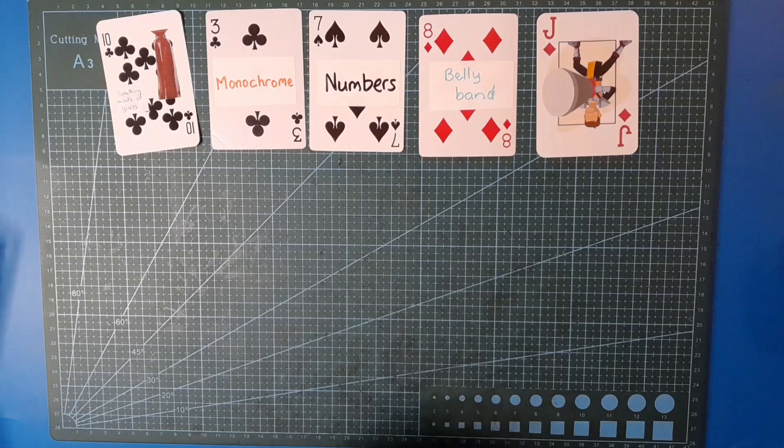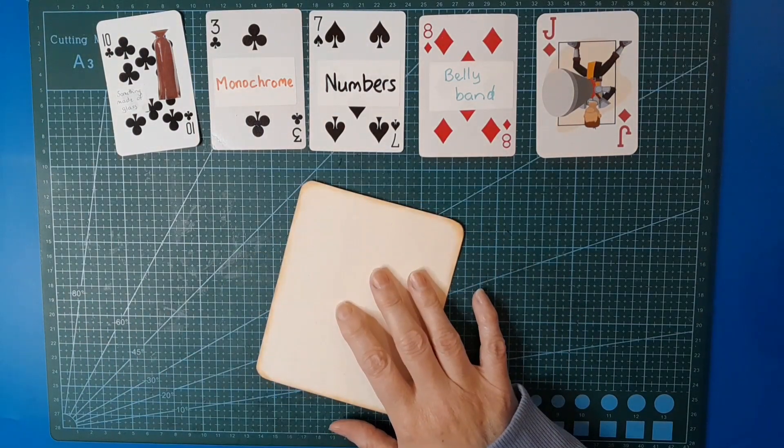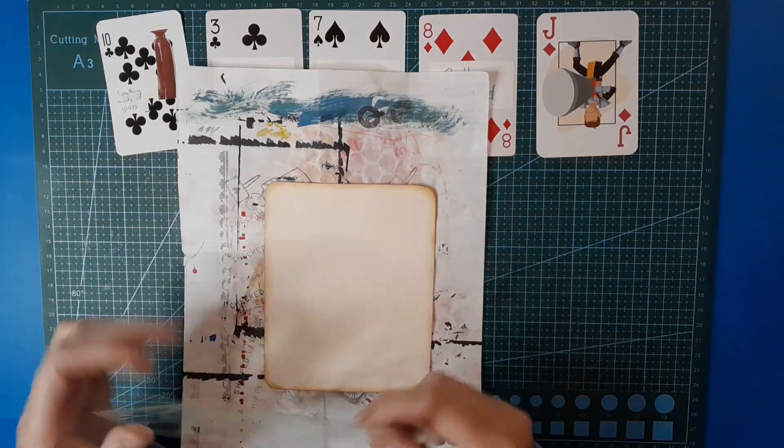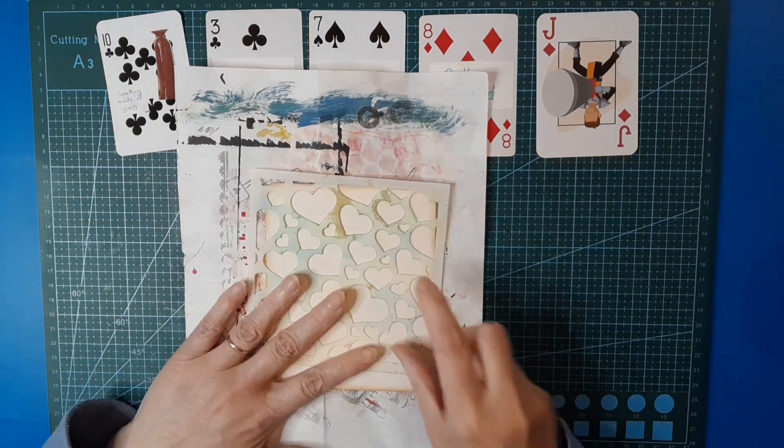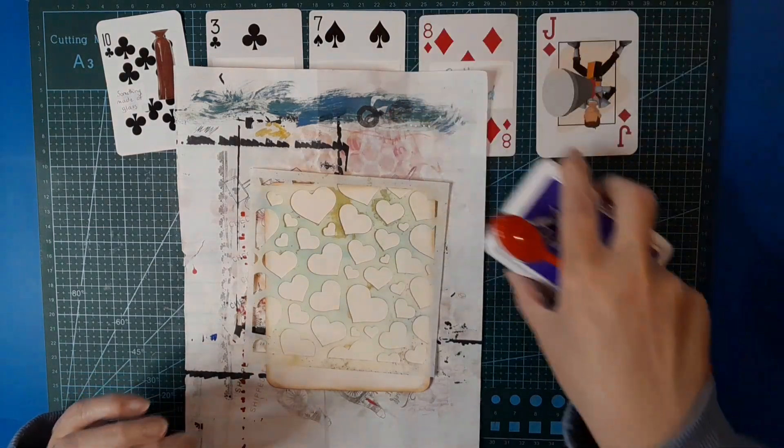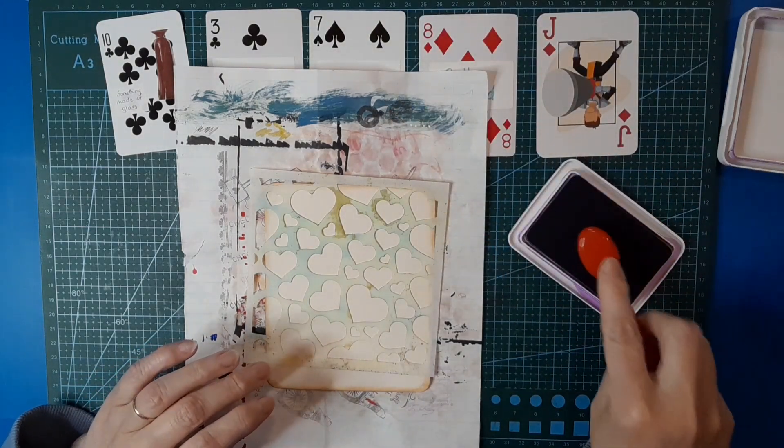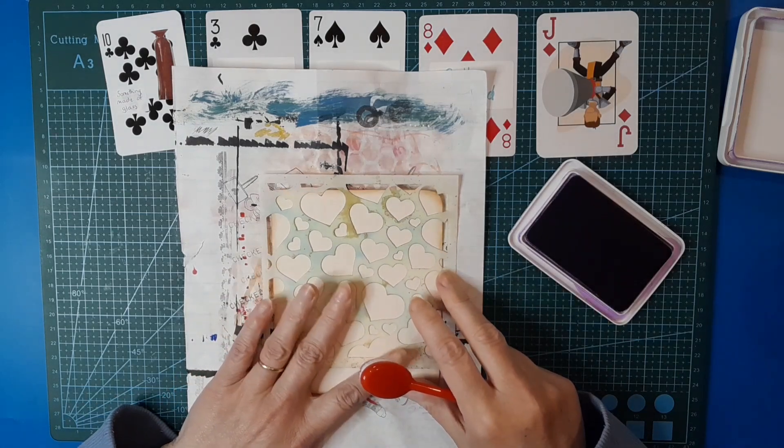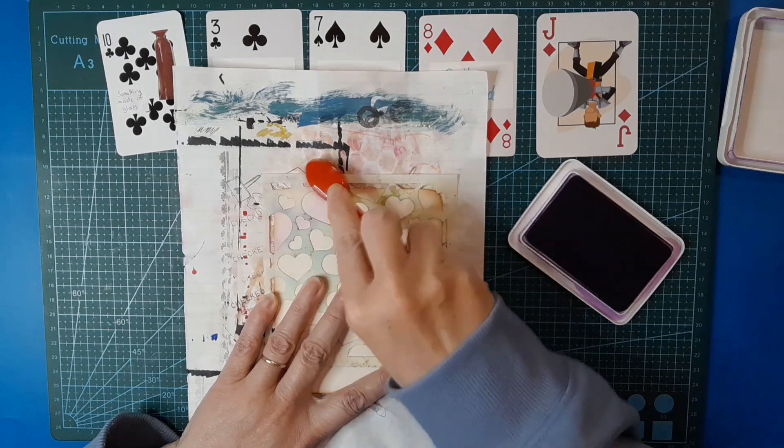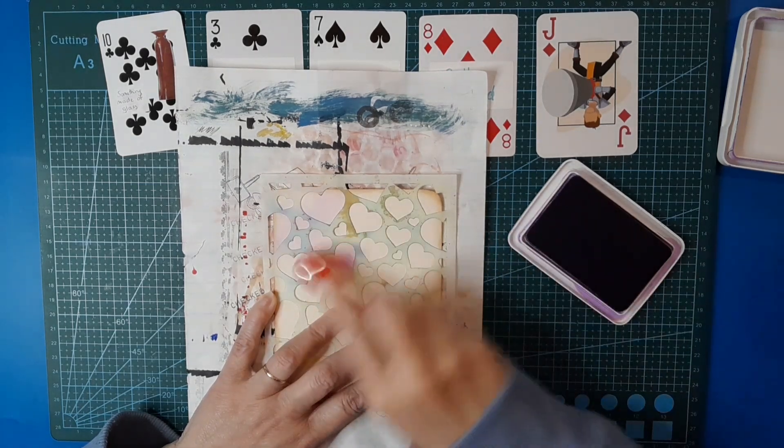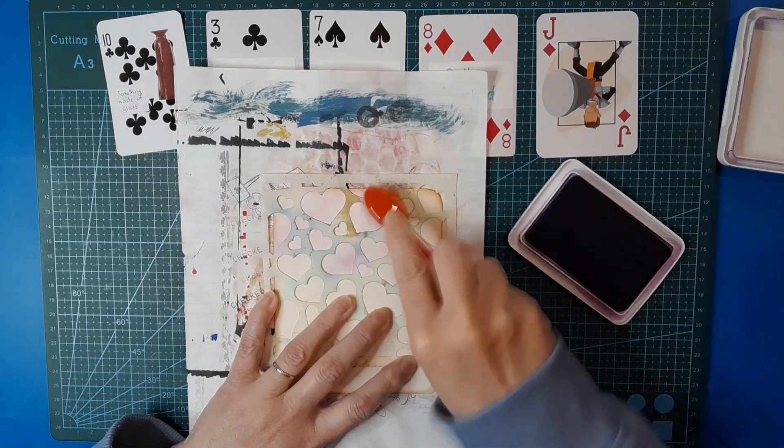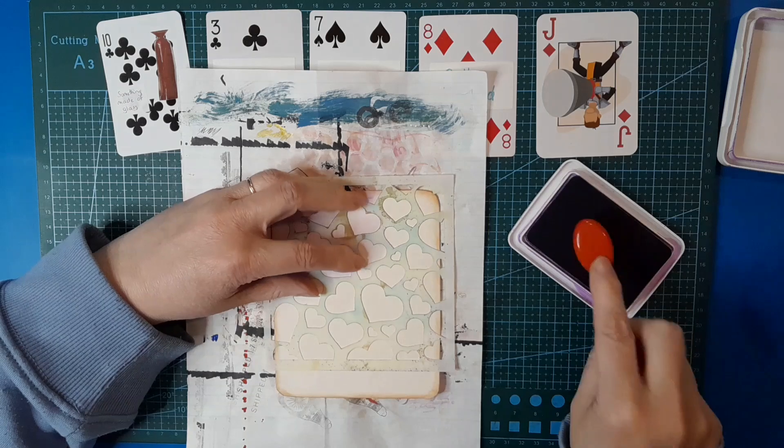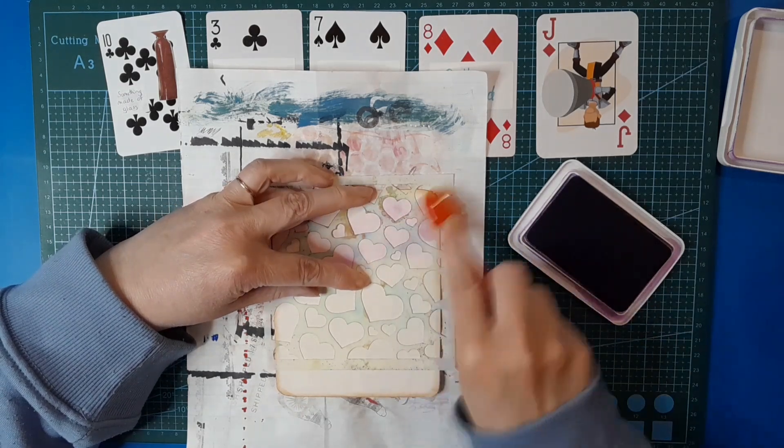Let's grab out the base and I'm going to stencil it first. I've chosen to go with this heart stencil today and purple as my color for the back. Let's do that while I have a think and work out where I want to go with this.